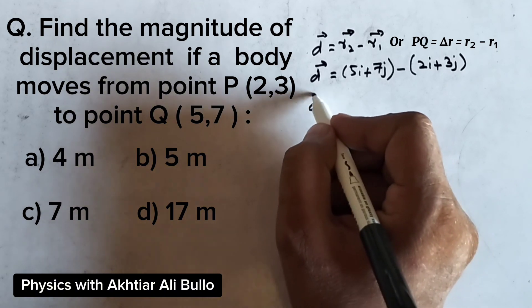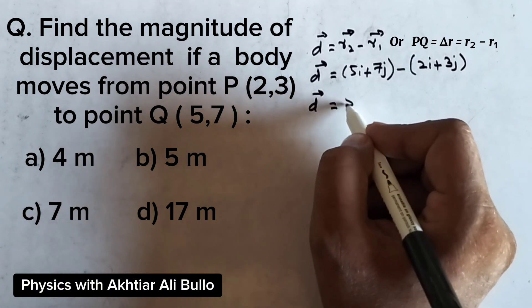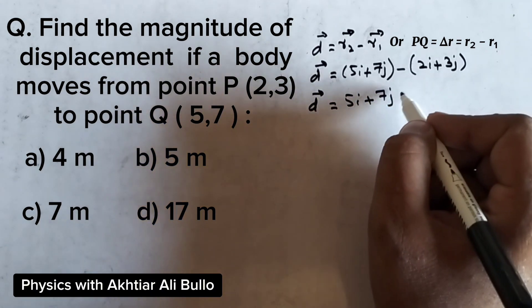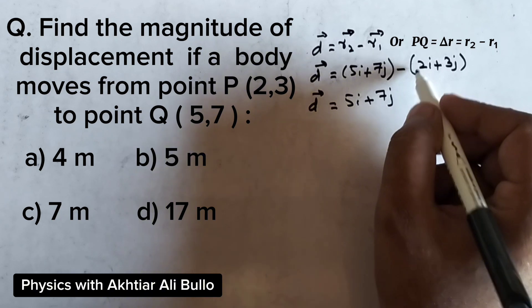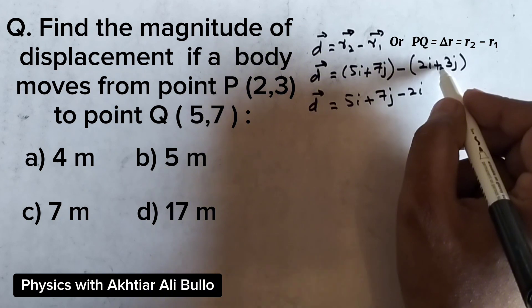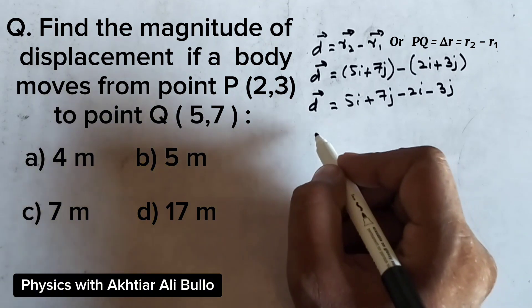So, displacement will be obtained as 5i plus 7j minus 2i minus 3j.